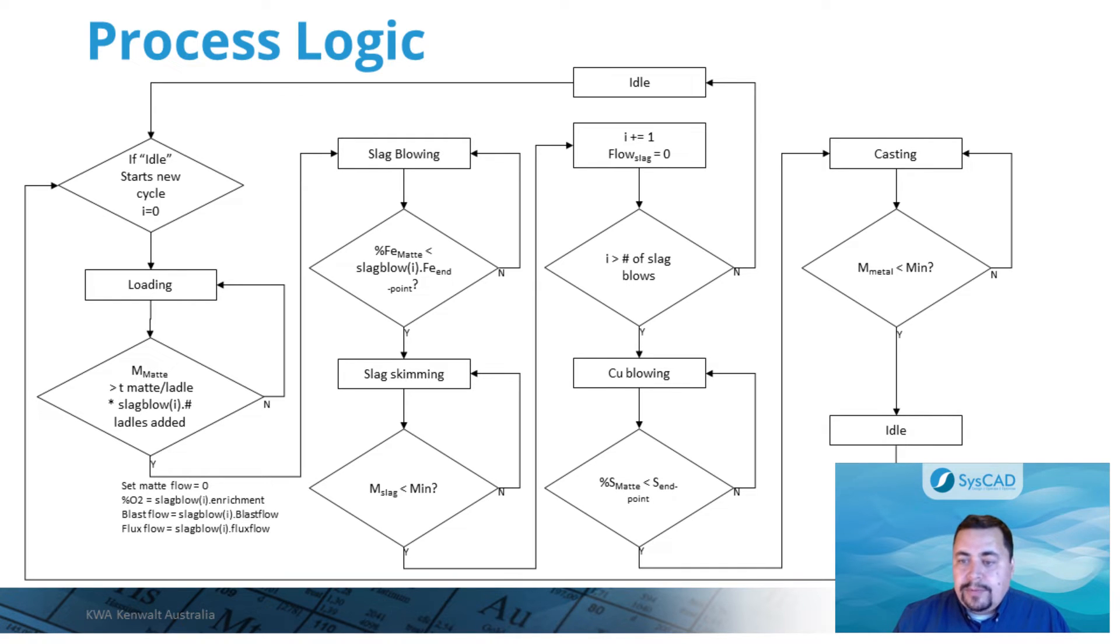During each slag blow, blast air and flux are added, mainly to remove iron from the matte to the slag phase until a set iron endpoint is reached. This is followed by a slag skimming sequence until the amount of slag remaining in the vessel is less than the minimum target. If the number of slag blows is still less than the specified number of slag blows for these cycles, then the process of loading slag blow and skimming is repeated.